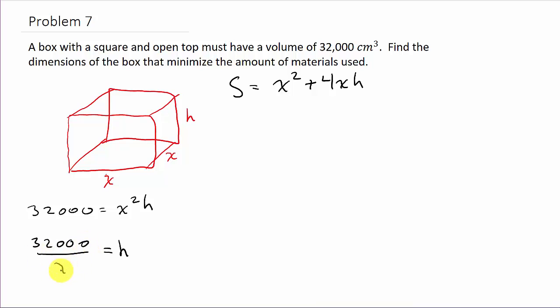I'll plug this in for H, so I get S is X squared plus 4X times 32,000 over X squared. That's going to give me the surface area is X squared plus 128,000 over X - the 4 times 32,000, and then this X and this X cancel.